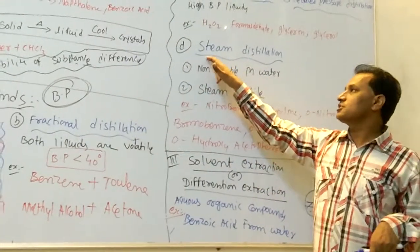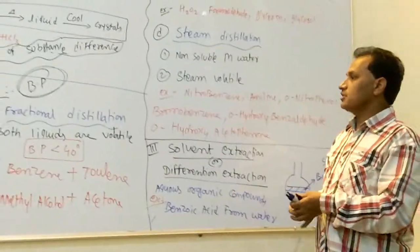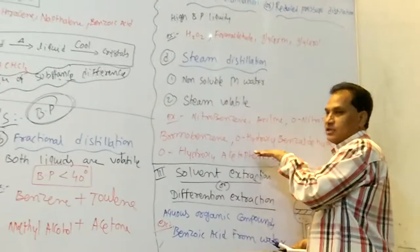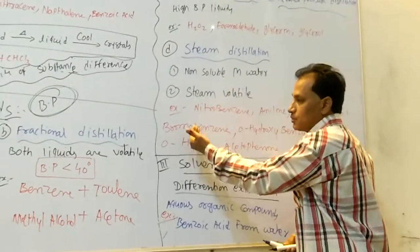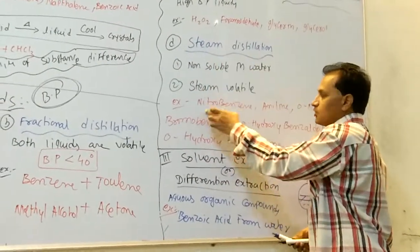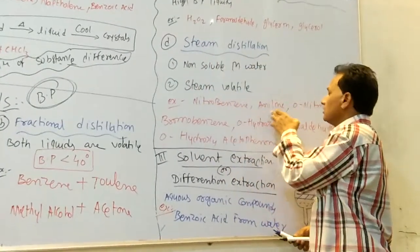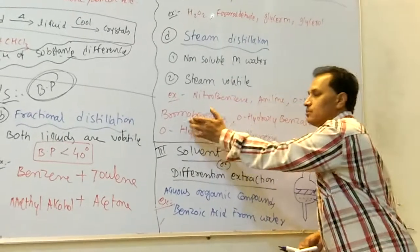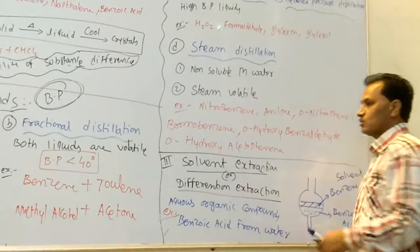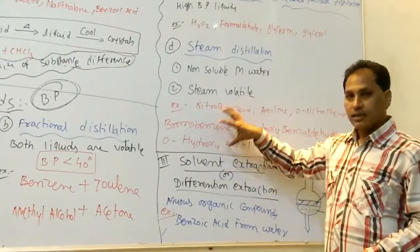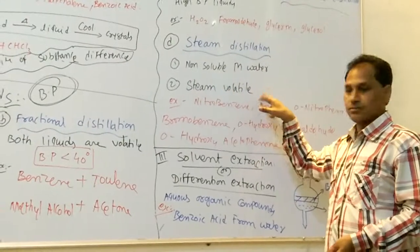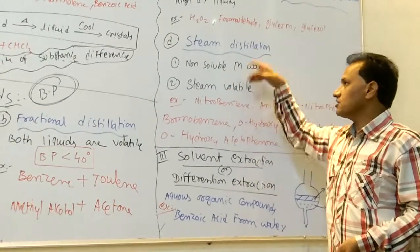The fourth method is steam distillation. Steam distillation is applicable for liquids which are not soluble in water. They produce vapours in the presence of steam. Examples: nitrobenzene, aniline, orthonitrophenol, bromobenzene, orthohydroxybenzaldehyde, and orthohydroxyacetophenone. These liquids are not soluble in water, but they produce vapours in steam, so they are purified by steam distillation.